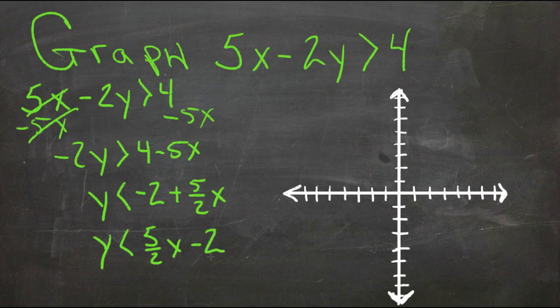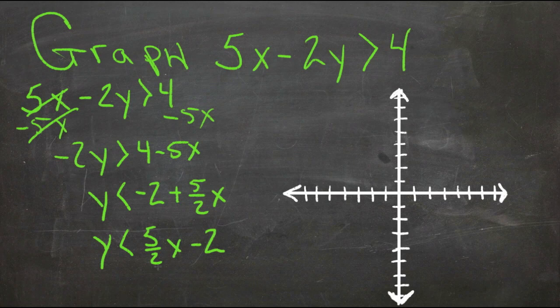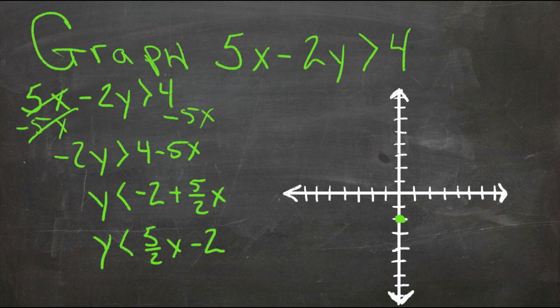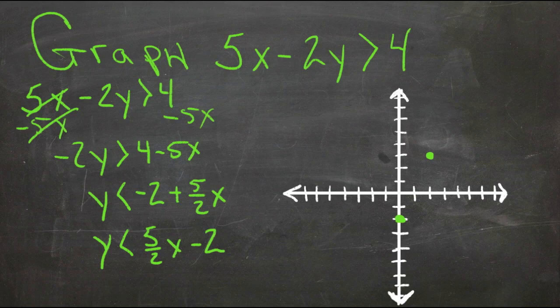So now we have our line and we have our y-intercept and our slope. We know that there's a point at negative 2, and that our slope is rise 5, run 2. So 1, 2, 3, 4, 5 and 1, 2, there's a point right here. Or down 5 and back 2, so another point about here.